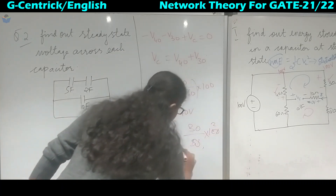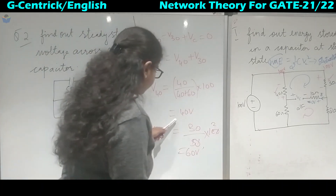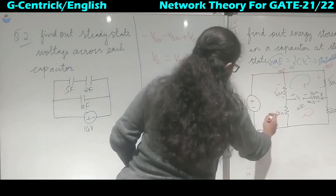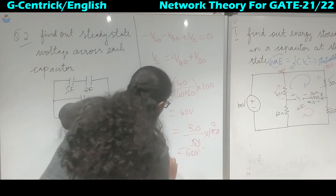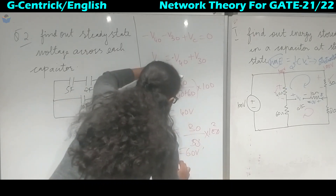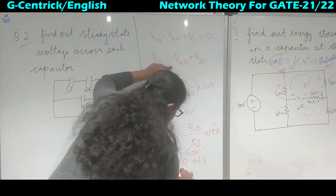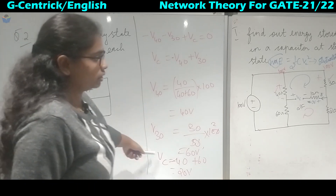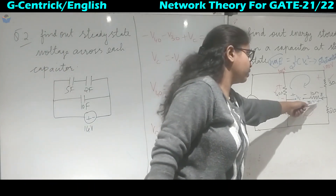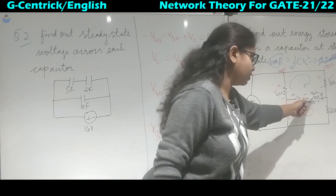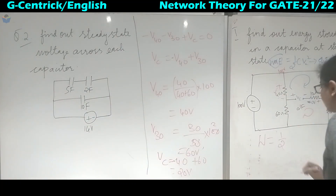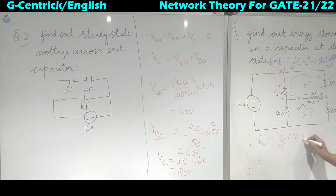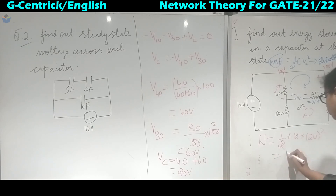Adding these: Vc = minus 40 plus 60, which equals 20 volts. So the voltage across the capacitor is 20 volts, and the drop across the 10 ohm resistor is 0 volts since no current flows through it. Using the energy formula: W = half into C (2 farad) into 20 squared = 400 joules of energy stored in the capacitor.